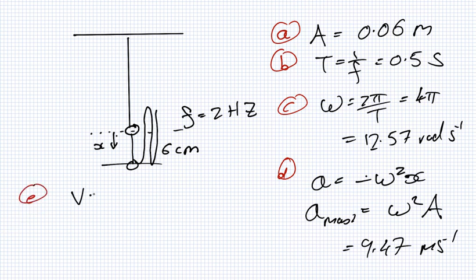Part E, the maximum velocity. So velocity equals... V² equals... I don't know which formula I want to use here. The easiest one. V equals ω plus or minus, and we don't worry about that too much, ω root A² minus X².